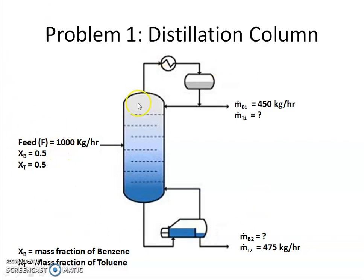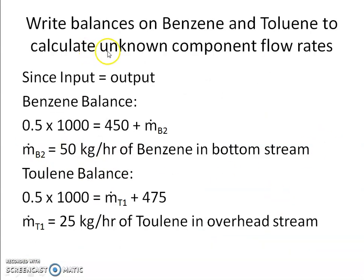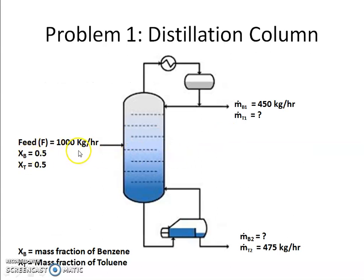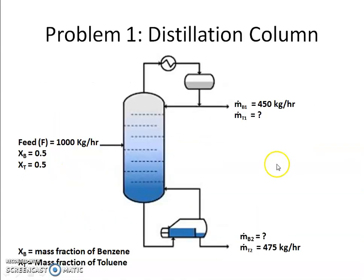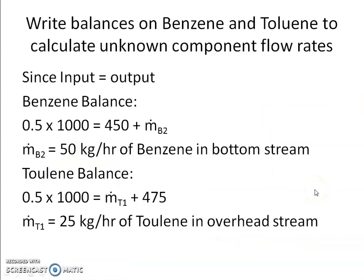The overall balance is the sum of the two component balances, so it is your choice how to set up the equations depending on what is easiest to solve. In this problem, I will write the benzene balance and the toluene balance. The benzene balance: input = 0.5 × 1000 = 500 kg = 450 + m-dot-B2. Similarly, writing the toluene balance, I can quickly solve both equations and find the amount of benzene in the bottom product and toluene in the distillate.